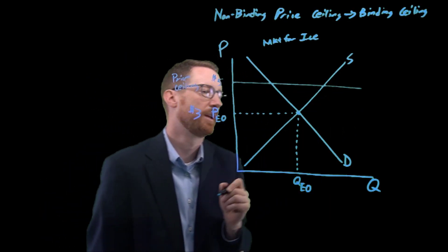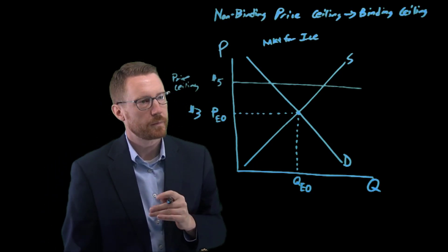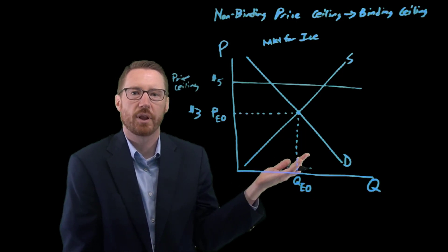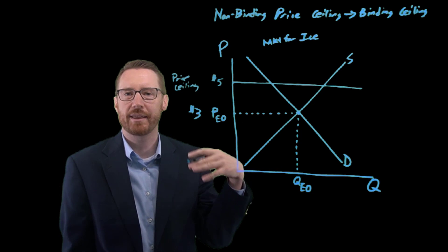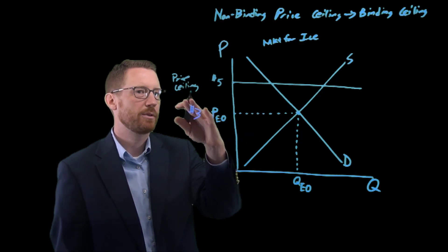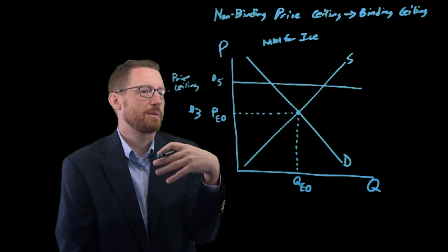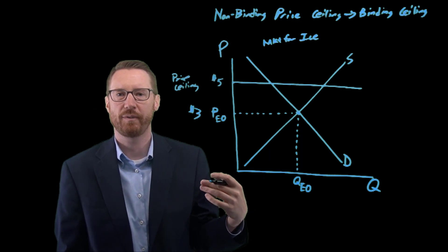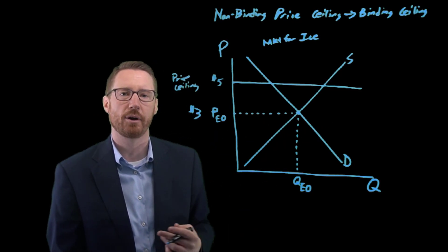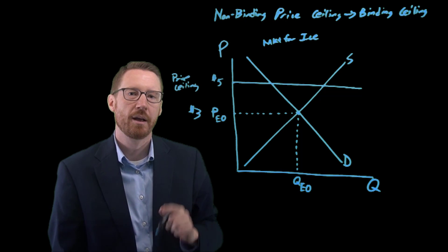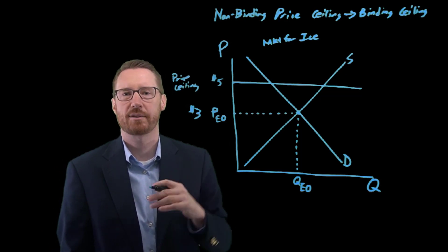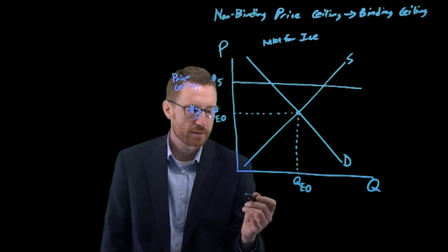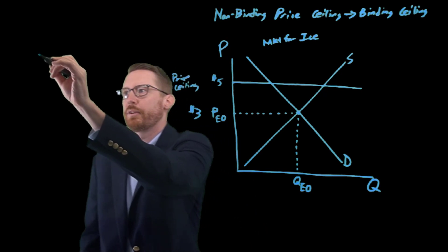Does this price ceiling matter? Well, sellers would love to sell at five dollars, but they can't. That's not the equilibrium price. Nobody really cares about this five dollars because the market for ice says the price is three dollars. Government says you can't charge more than five bucks. Everybody shrugs and just keeps going along about their business. But what happens if there's an event that shocks this market? Maybe a hurricane, for example.